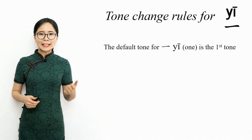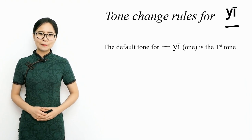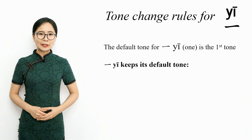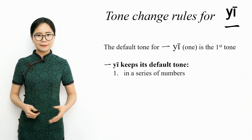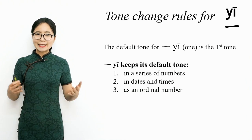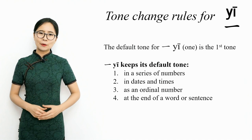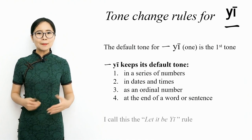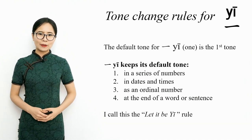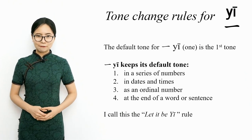The default tone for Yi, the number one, is the first tone, the high level tone. Yi keeps its default tone when it's used in a series of numbers, in dates and times, when it's used as an ordinal number, and when it's used at the end of a word or sentence. I'm going to call this the 'let it be Yi' rule. When this rule applies, Yi keeps its default tone, the first tone.